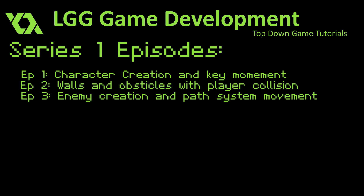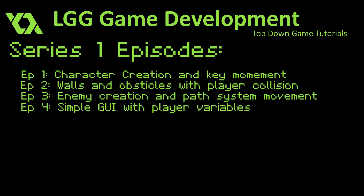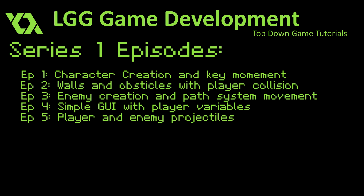Episode 4 will be simple GUI based off of the player variables, such as health and stamina — we're going to be creating a simple GUI on the screen. Episode 5 will be using the player and enemies to create projectiles that the player can shoot and projectiles that the enemy can shoot when they are near the player.